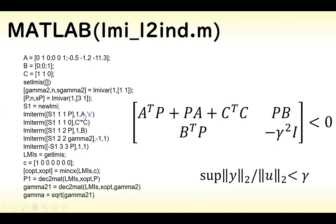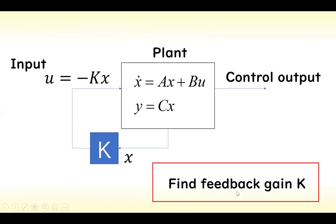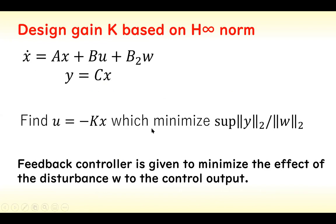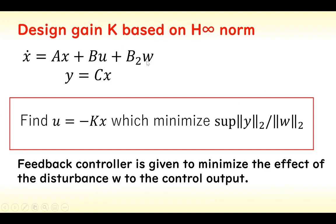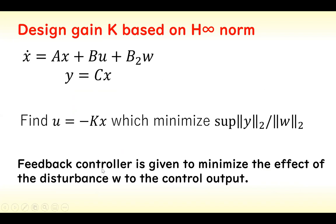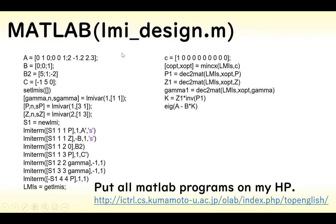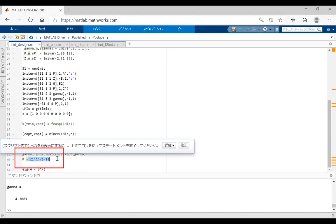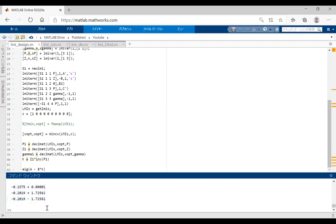Then we consider the MATLAB problem for feedback control system design. We find feedback gain K to satisfy stability and control performance. We find a controller which minimizes the L2-induced norm from disturbance W to output Y. The feedback controller is designed to minimize the effect of disturbance W on the control output Y. This slide shows the LMI program code to design the feedback controller. Note that all MATLAB programs are posted on the homepage. We obtain the feedback gain K by this equation. This value is the pole of the feedback control system, and the feedback gain is given like this.